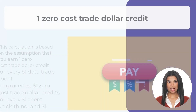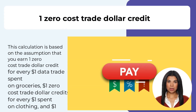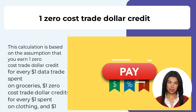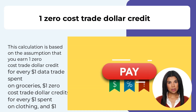This calculation is based on the assumption that you earn one zero-cost trade dollar credit for every $1 data trade on groceries, and $1 zero-cost trade dollar credits for every $1 consumer data trades spent on clothing.